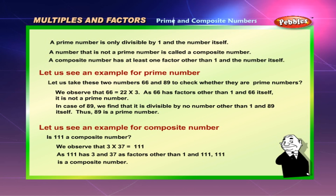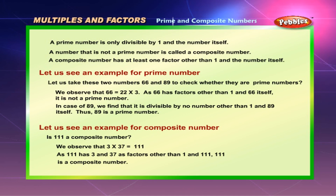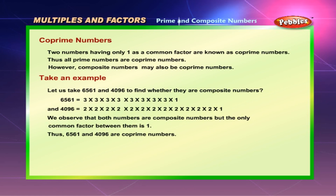Example for composite number: is 111 a composite number? We observe that 3 into 37 equals 111. As 111 has 3 and 37 as factors other than 1 and 111, it is a composite number.